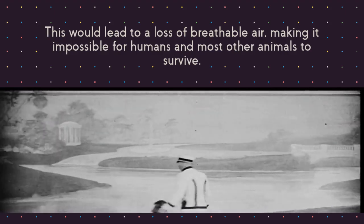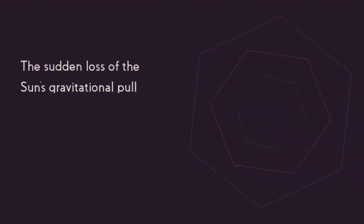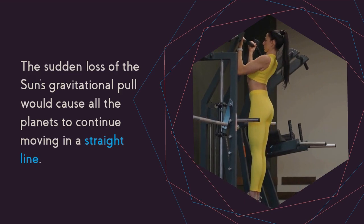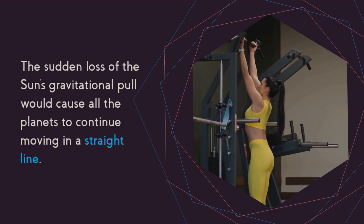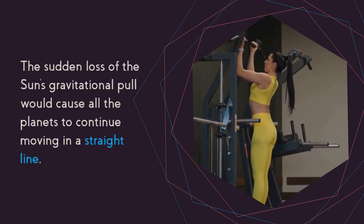The sudden loss of the sun's gravitational pull would cause all the planets to continue moving in a straight line.